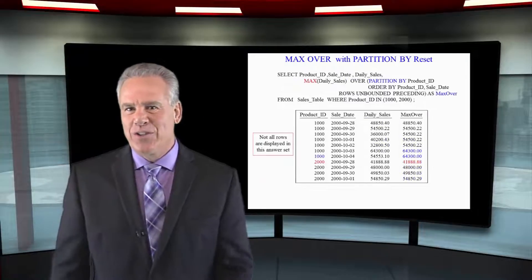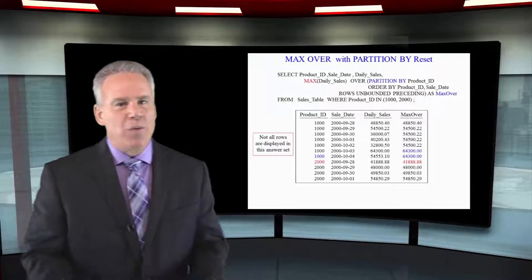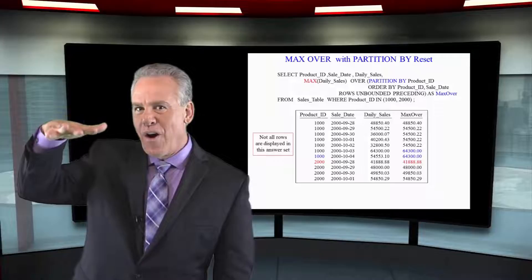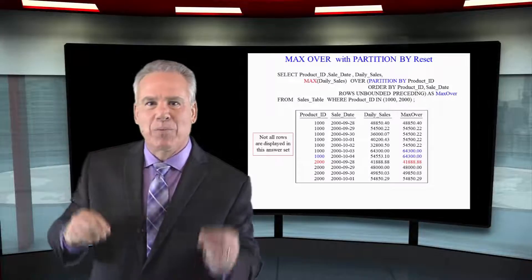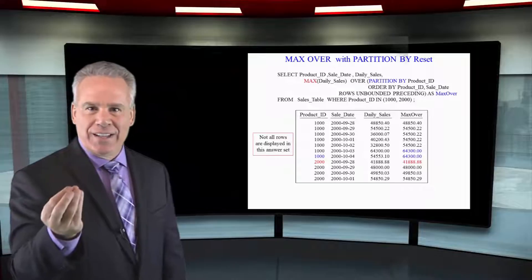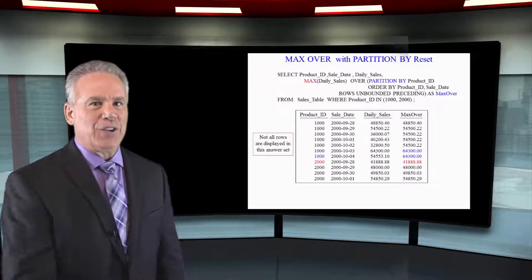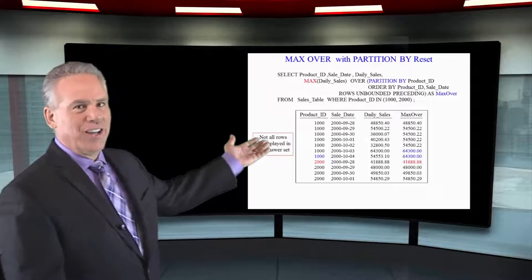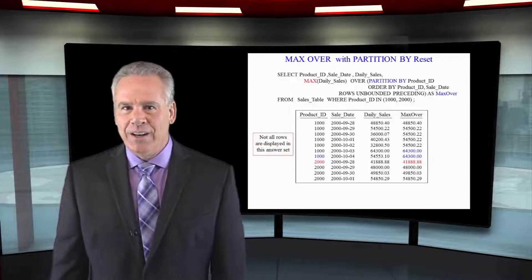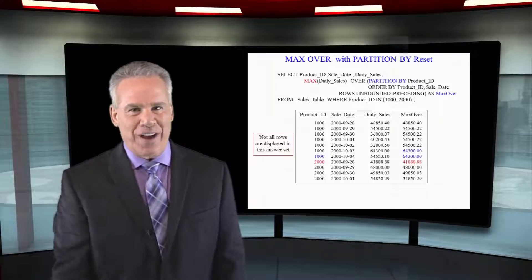Here's another version of our MAX OVER of daily sales, which again brings me the max value thus far after things are sorted by product ID and sale date. But what's interesting is it resets, and you notice it has the PARTITION BY statement — specifically, PARTITION BY product ID. I will start this again when I reach the new product ID.